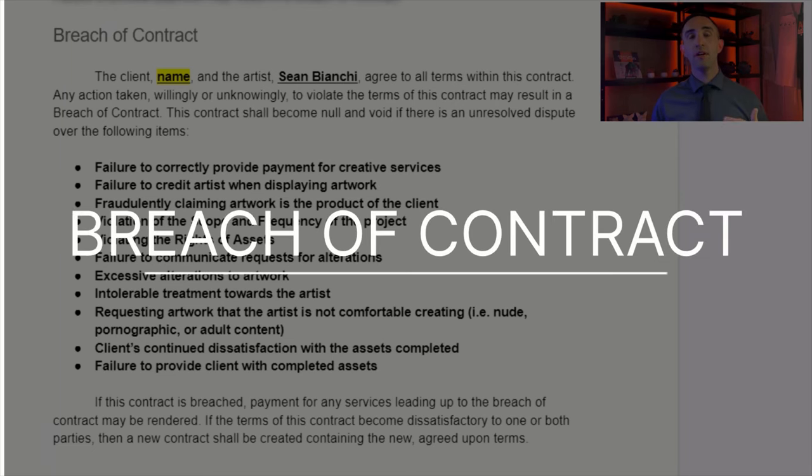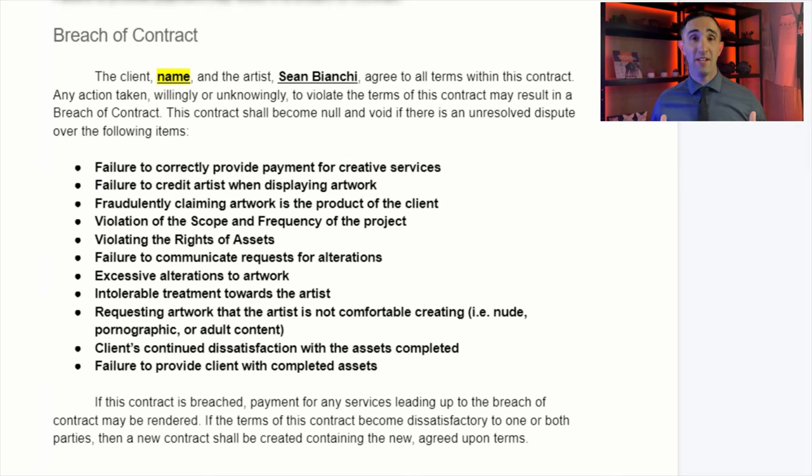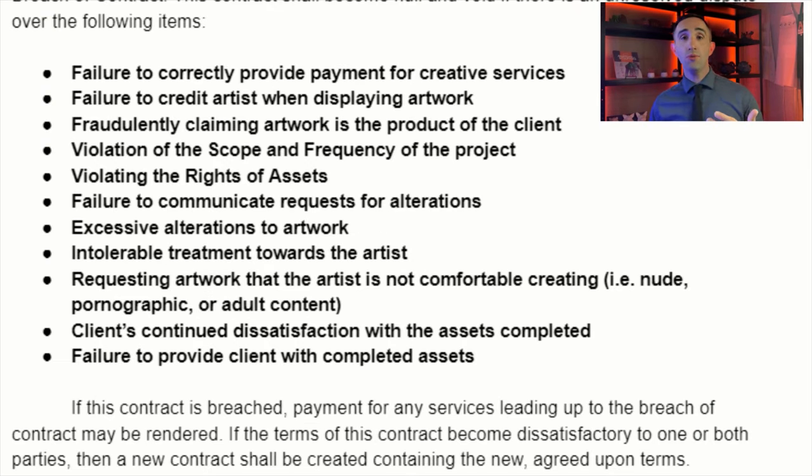The last term covers breach of contract, which is basically an exit clause: if either you or the client violates any of the terms, neither party is obligated to continue the working relationship. All of this is just to protect both of you. The final page is for you to sign and date, and this is also where a notary would stamp and sign as well. If you want to learn more about how to create a great art business and find clients, go ahead and watch those videos.